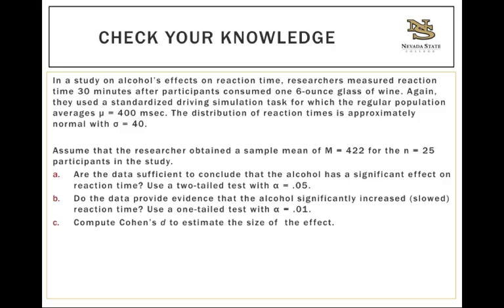We'll also run a one-tailed test using a directional hypothesis of a significant increase in reaction time — meaning you're taking more time to react, so you're slower. That one-tailed test will be on the right tail with alpha = 0.01. It's pretty standard to use alpha = 0.05 for two-tailed and alpha = 0.01 for one-tailed tests, though the researcher can set their own alpha level. As a community, we've decided 0.05 is acceptable; you can make it smaller to avoid a Type I error.